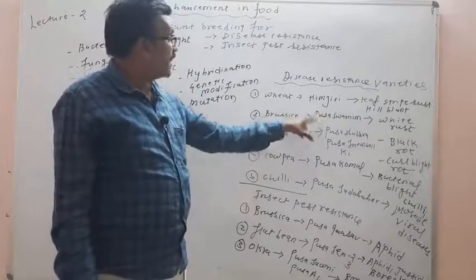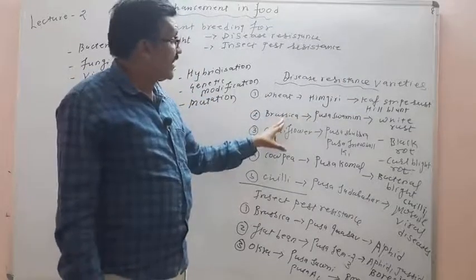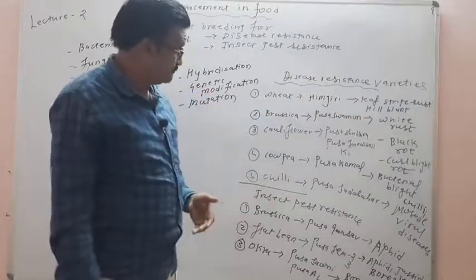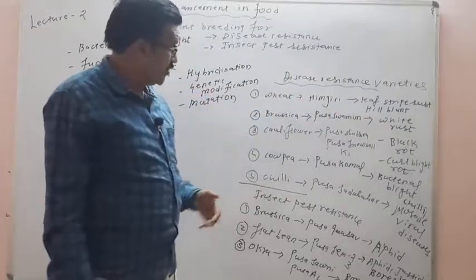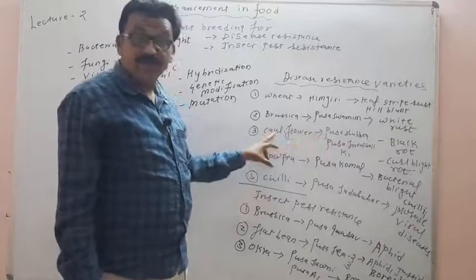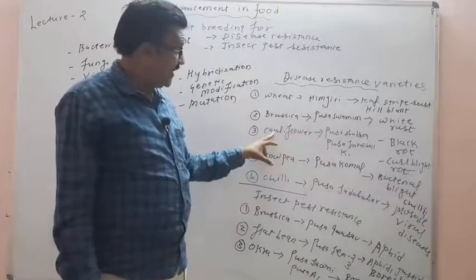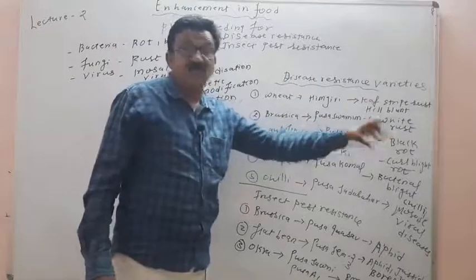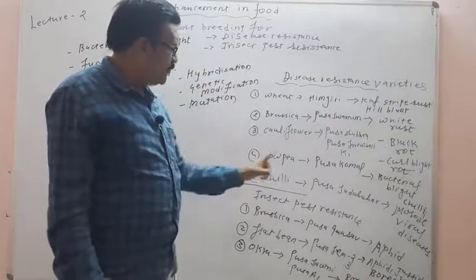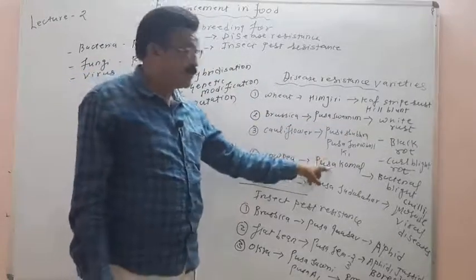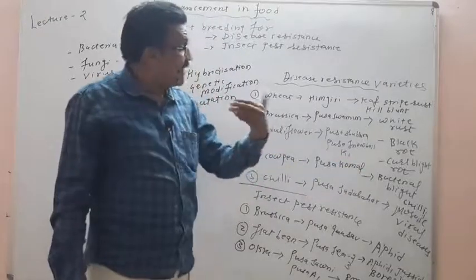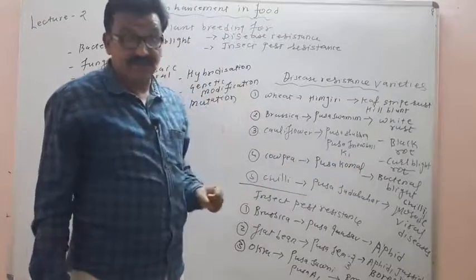Pusa Swarnim Brassica variety shows resistance against white rust disease. Pusa Shubra and Pusa Snowball K1 cauliflower varieties show resistance against black rot disease. The cowpea variety Pusa Komal shows resistance against bacterial blight disease.